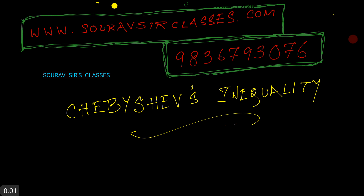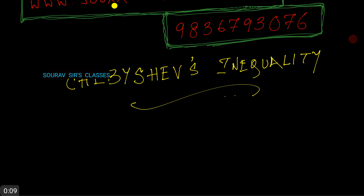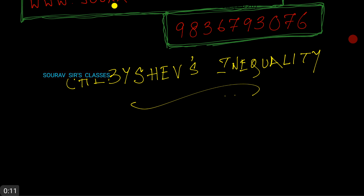Hello and welcome to Sorofsir Classes. In this video we'll learn about Chebyshev's inequality. Chebyshev's inequality is named after Pafnuti Chebyshev, which states that: if a₁ ≥ a₂ ≥ ... and the theorem begins as follows.